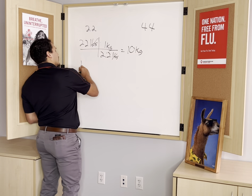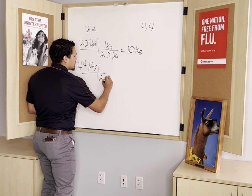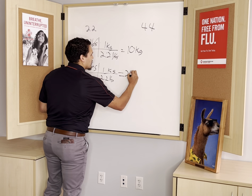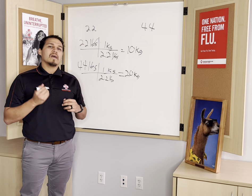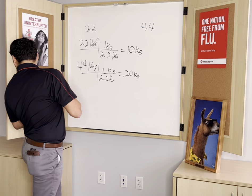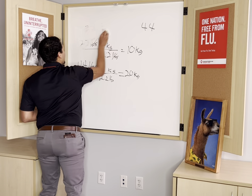For our 44-pound baby, we do something similar: 44 pounds divided by 2.2 gives us 20 kilograms. The weight is very important because our dosings for both Tylenol and Ibuprofen — two different anti-fever medications — are based on kilograms. So I'm going to erase this and then we'll go on to our first calculation.